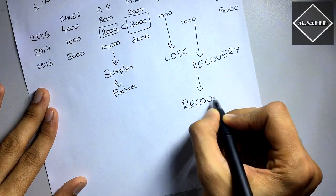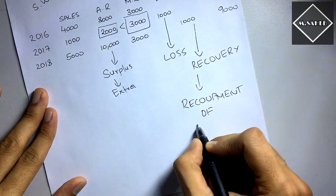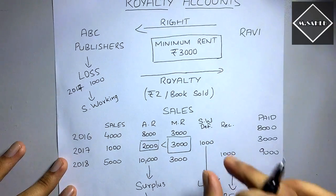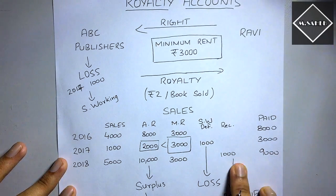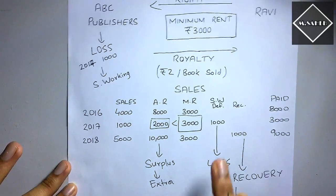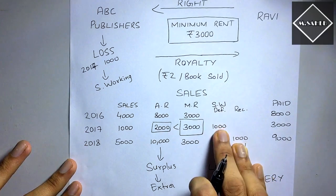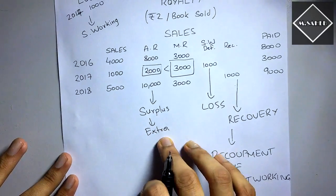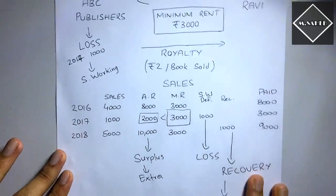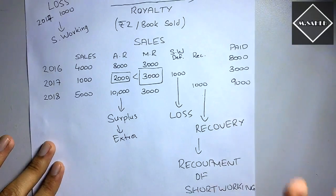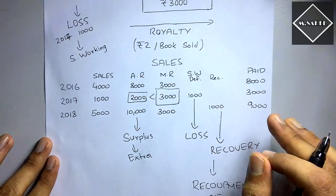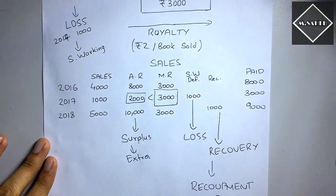This is what is meant by recoupment of short working. Recoupment simply means recovery. There was a loss, and in the coming years the recovery was made. Short working is the deficiency which arises whenever the actual royalty falls below minimum rent. But in the coming years when there is surplus, the lessee can recover his losses and pay less to the lessor. This is what is meant by short working and recoupment of short working. We will see the actual problems in later videos — here I've just given you a rough example so that you can understand the concept of royalty accounts completely.